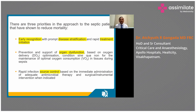When we are dealing with patients with sepsis, there are three priorities in the approach that would help with reducing mortality and saving lives. The priorities are: early recognition with prompt disease stratification and rapid treatment initiation; prevention and support of organ dysfunction — basically optimizing oxygen delivery to the tissues; and rapid infection source control as soon as possible, with immediate administration of adequate antimicrobial therapy, plus or minus surgical or instrumental intervention to control the source.